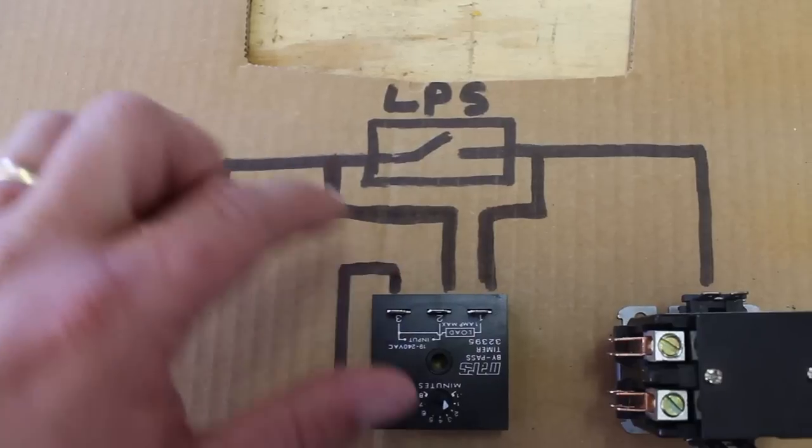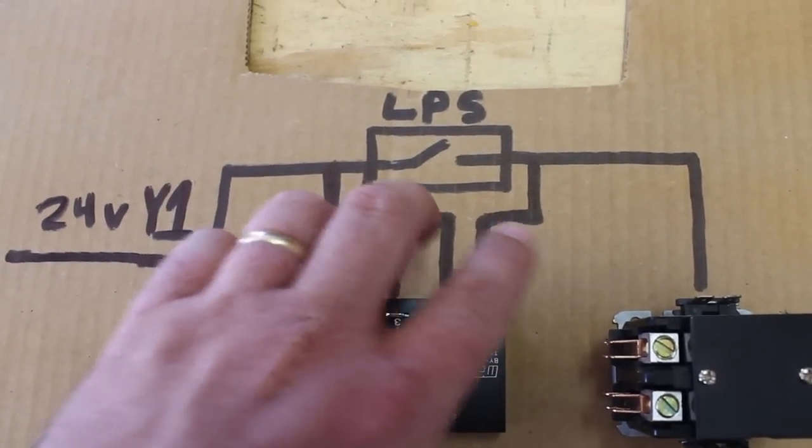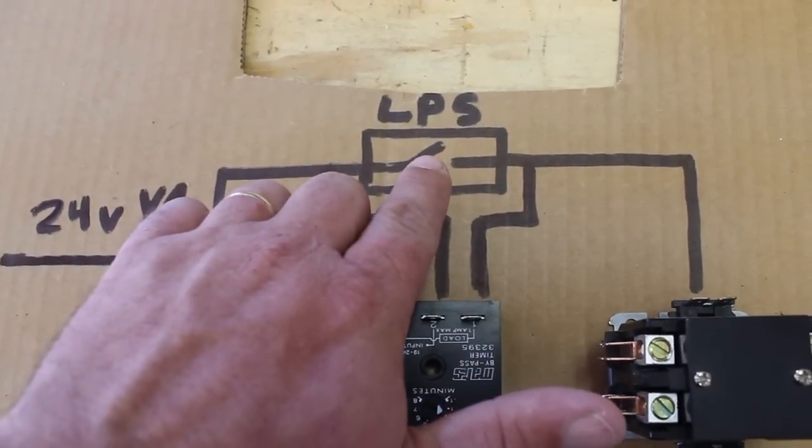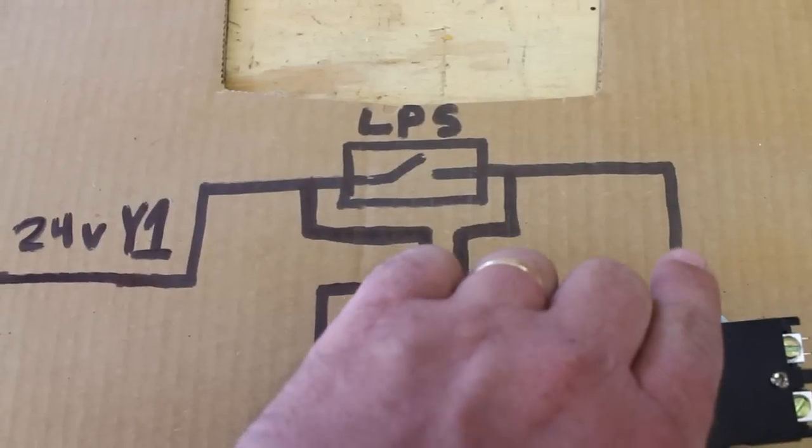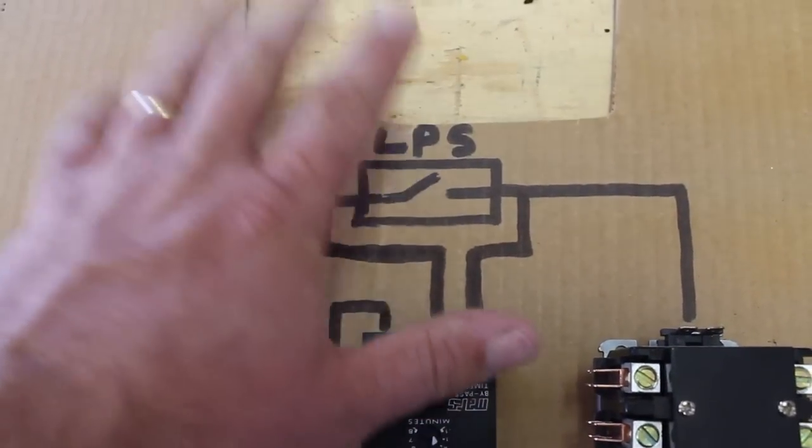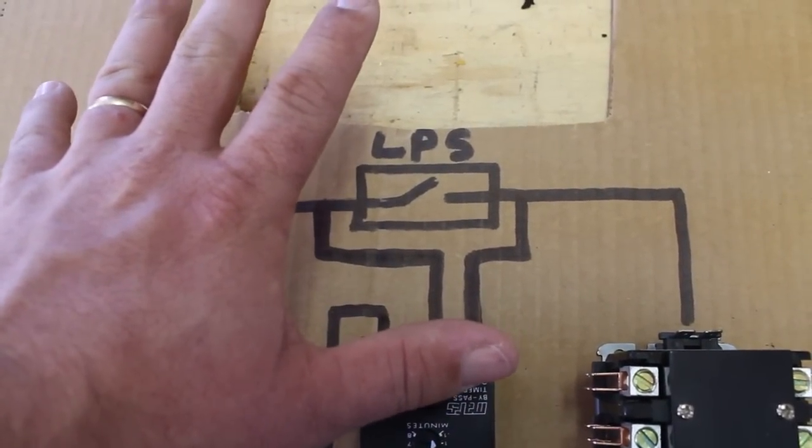After the timer runs out, it cuts this flow off and goes back to the low pressure switch. As long as it's closed, it'll keep flowing to the contactor. If not, it will stay open and stop the call.